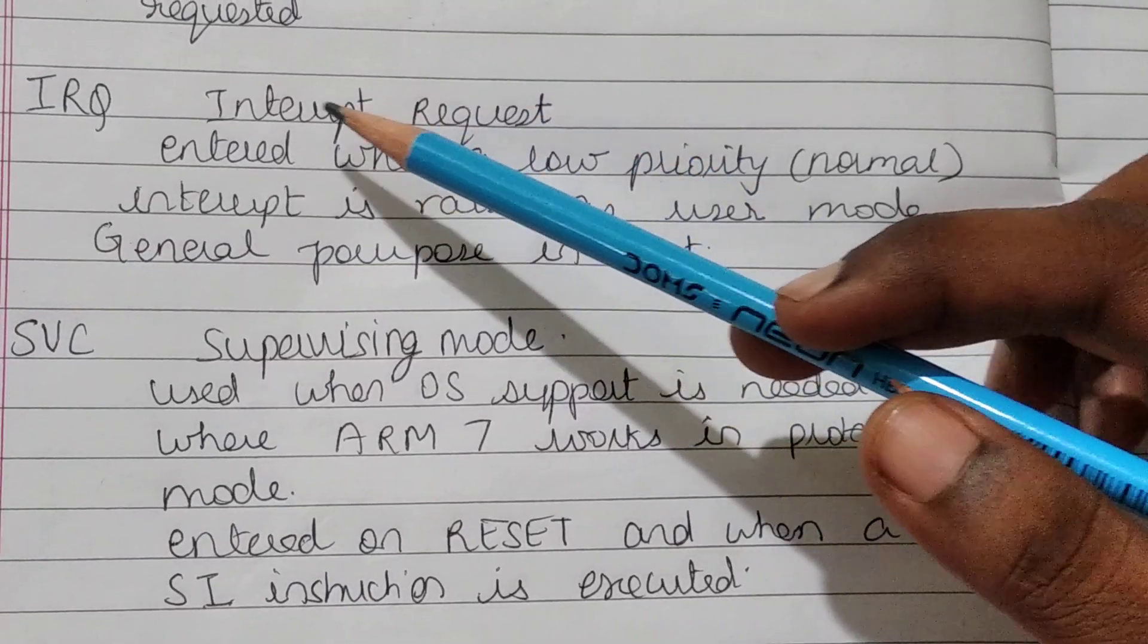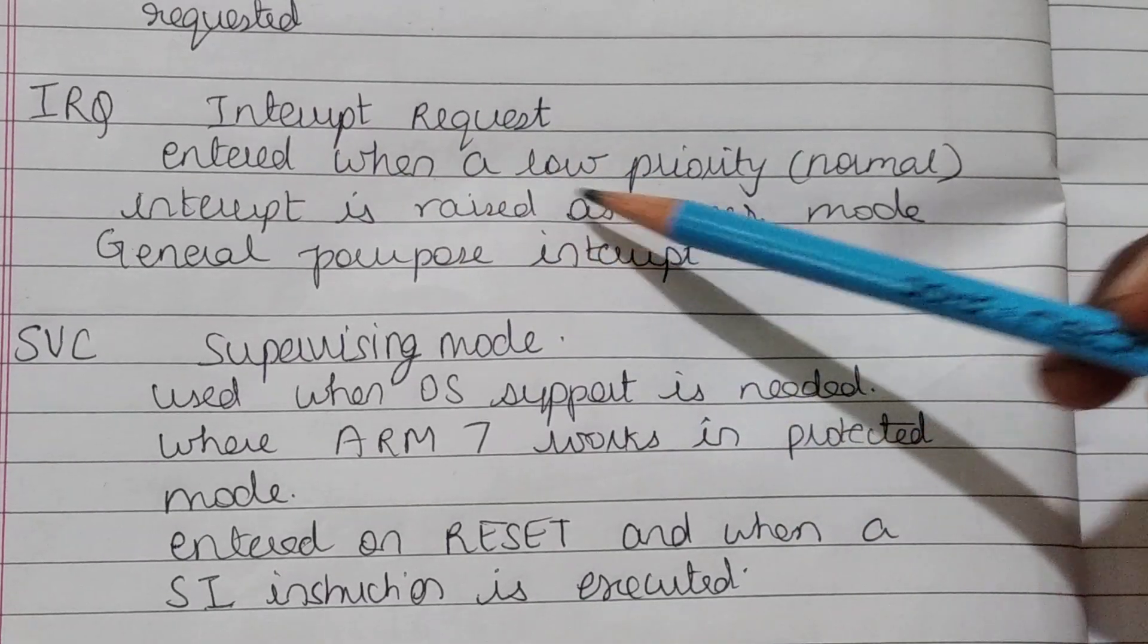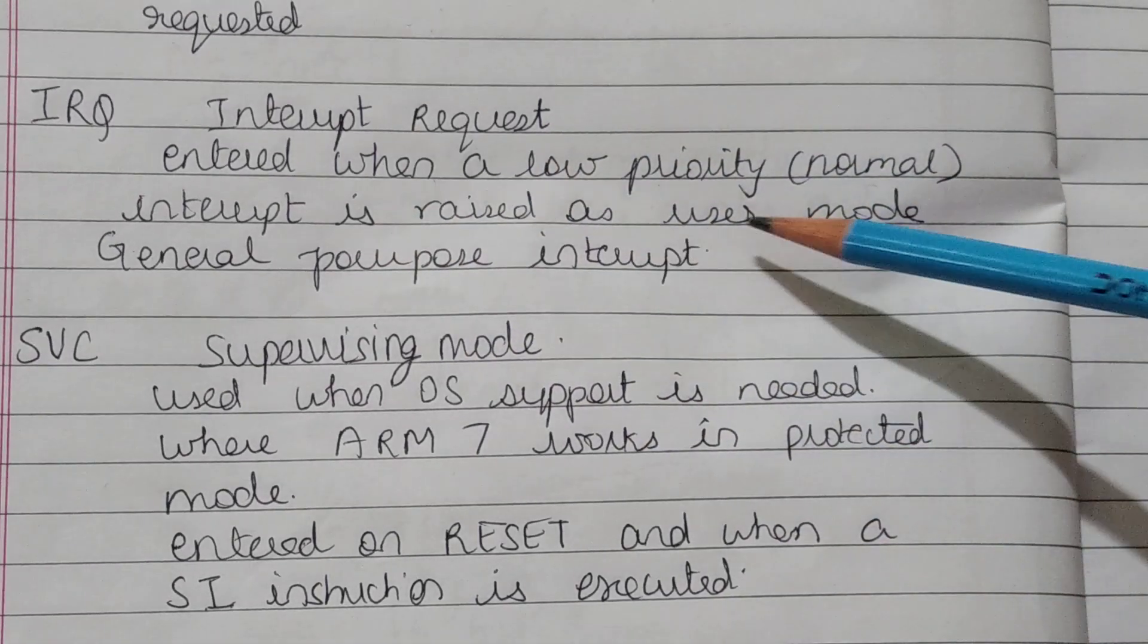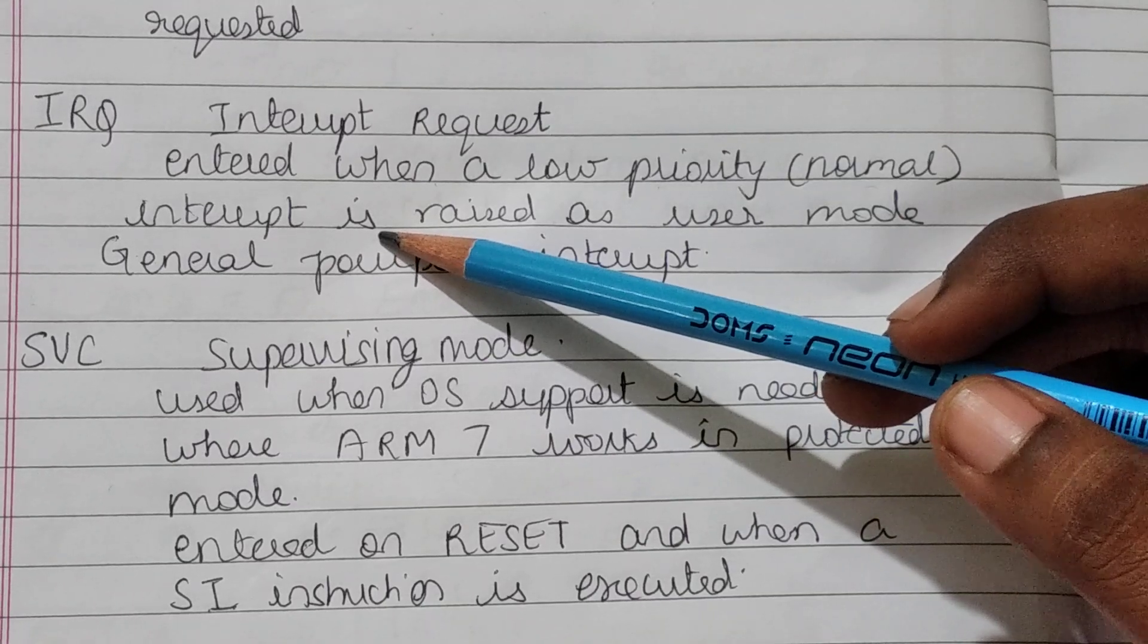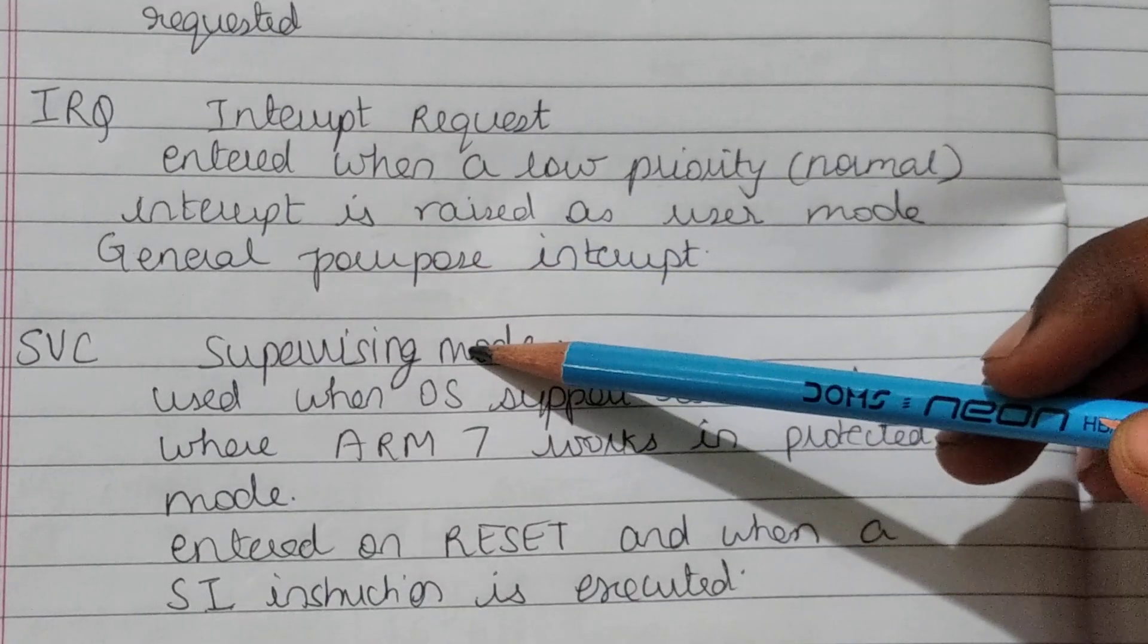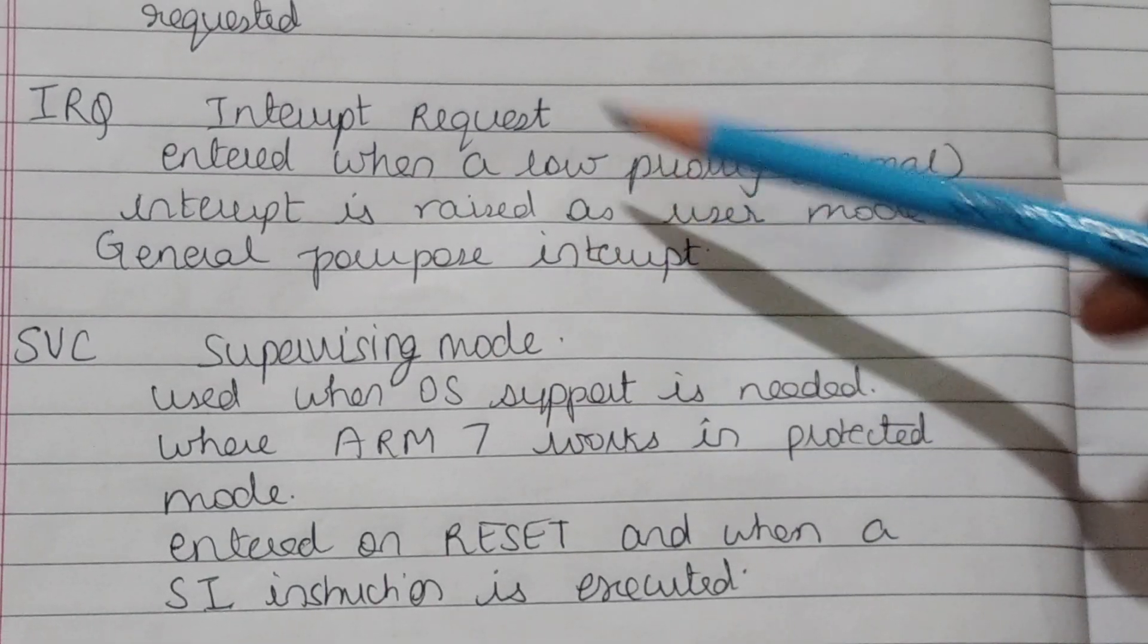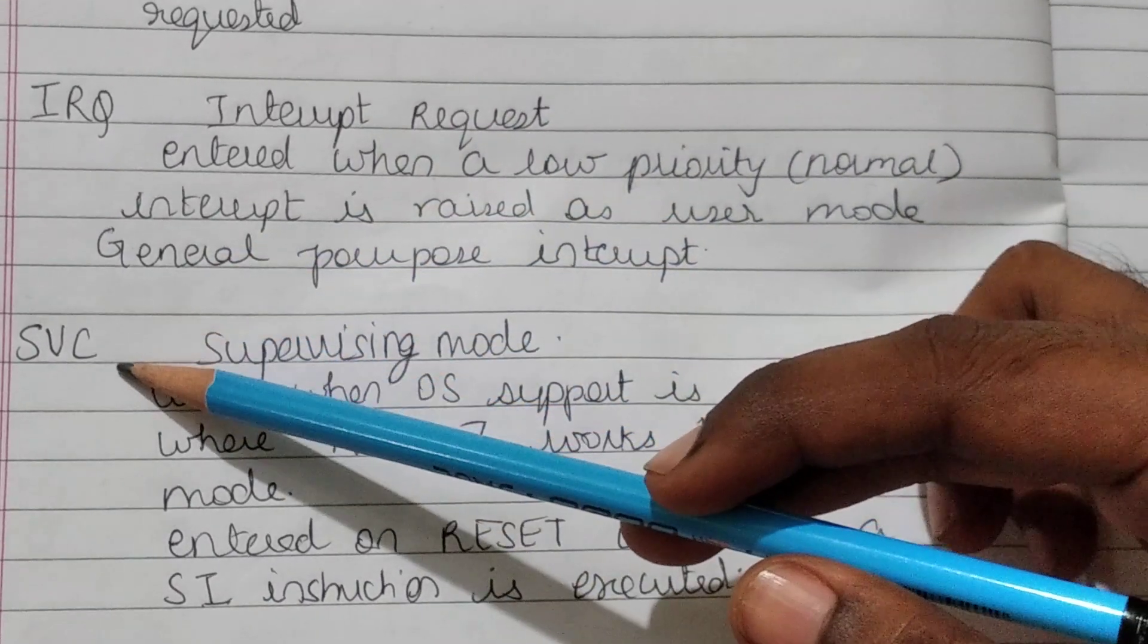Then comes IRQ - that is interrupt request. Entered when a low priority normal interrupt is raised as a user mode. So IRQ mode is used for general purpose interrupts. It is entered by ARM7 when IRQ is requested.